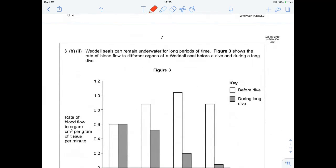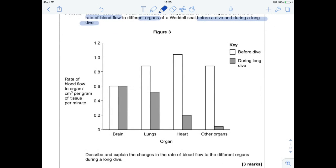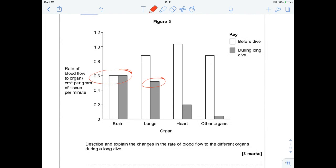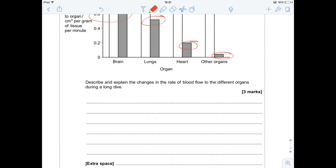So let's have a little look. Next question. Weddell seals can remain underwater for a long period of time. Interesting fact, not really that relevant to your question. Figure 3 shows the rate of blood flow to different organs of Weddell seal before a dive and during a long dive. Okay. So interesting things before we start to look at this in a great deal of detail. If we look at before a dive and during a dive, so if we compare those two, things we should be picking up on. Hey, look. The brain gets the same amount of blood flow all the time. Whereas during a long dive, lungs, heart and other organs get progressively less and less and less. Before a dive, the lungs and heart get more blood flow and other organs pretty much the same. So we're going to have a little look at these and see what the question wants. So describe and explain the changes in blood flow during a long dive.